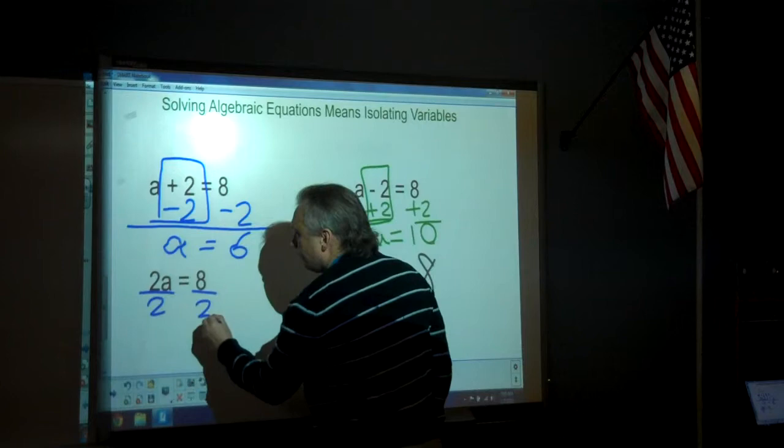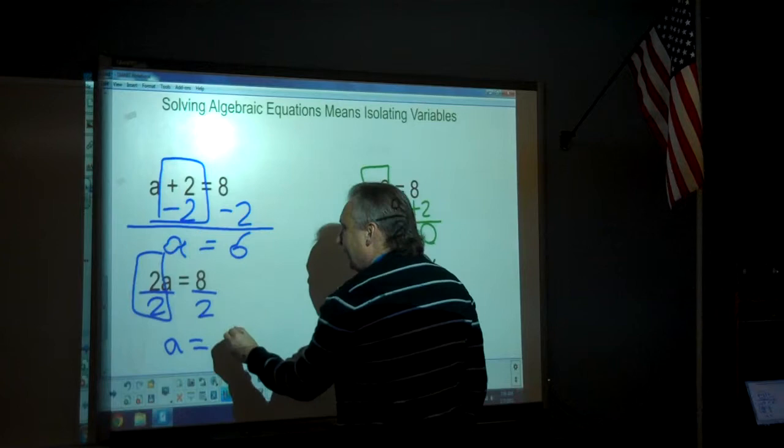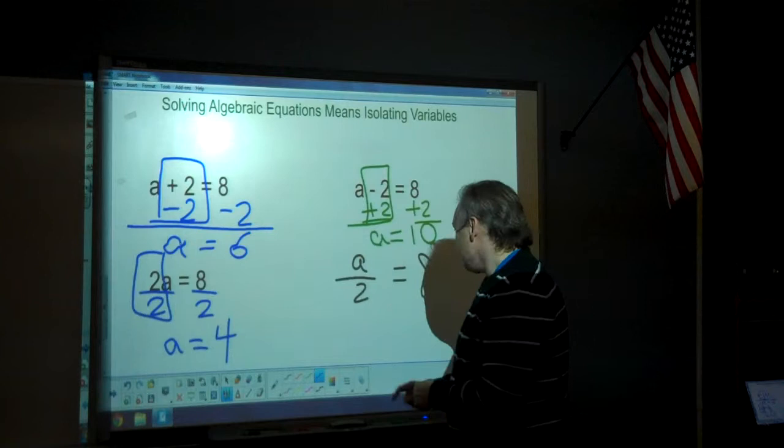So we divide both sides by 2. The 2s go away, and that leaves us with an a on this side. And 8 divided by 2 is 4. So in this case, a is equal to 4.